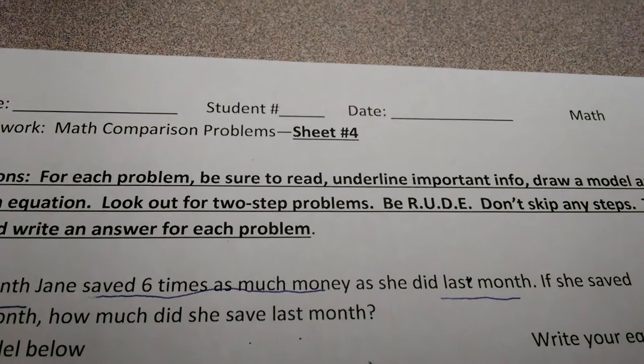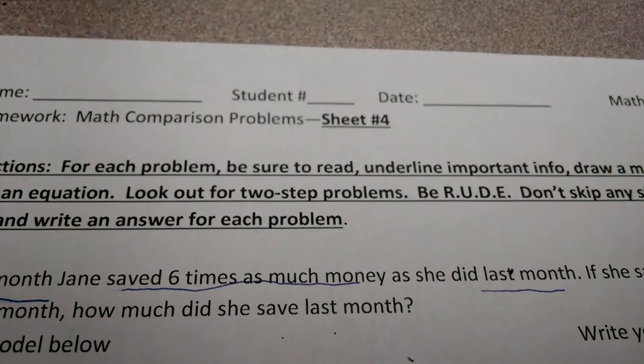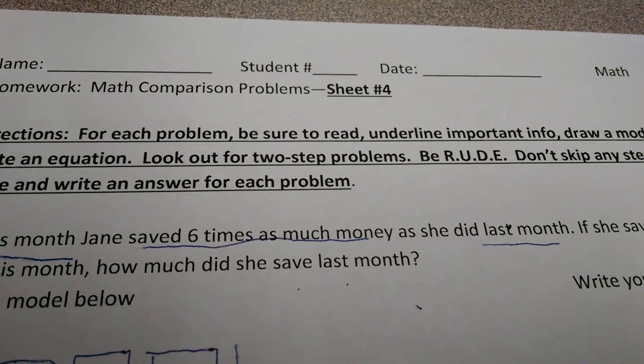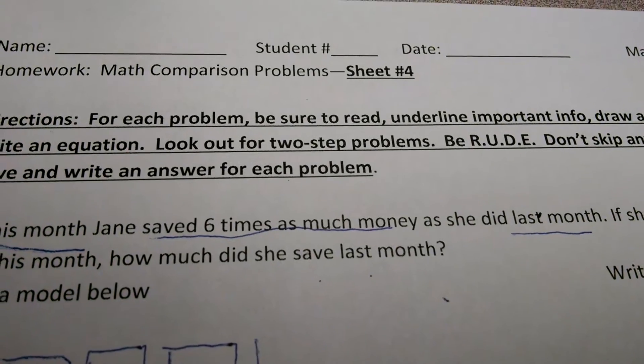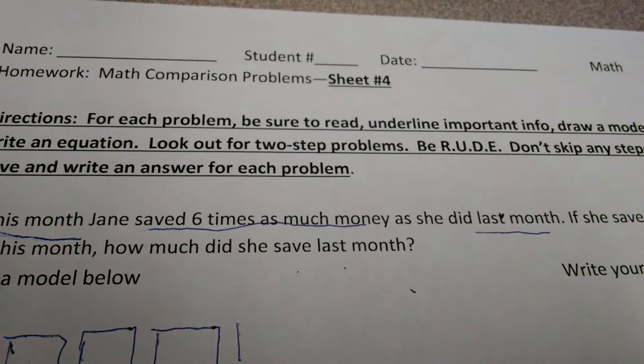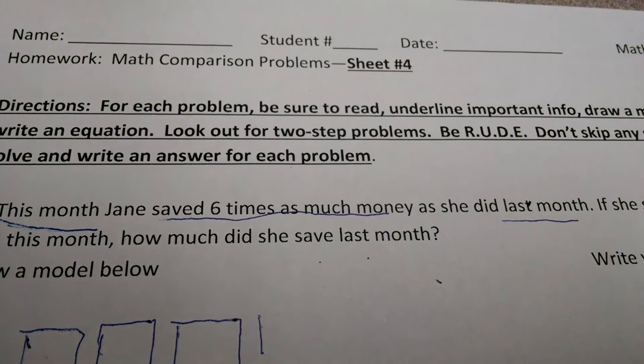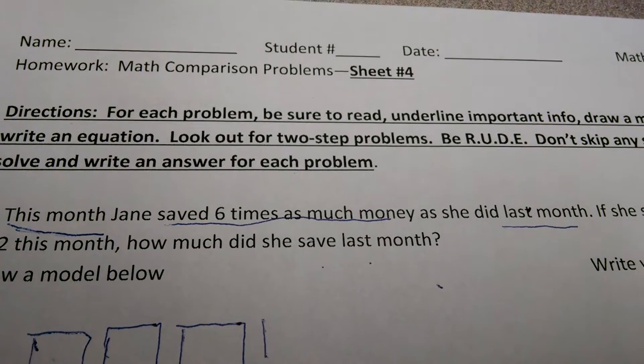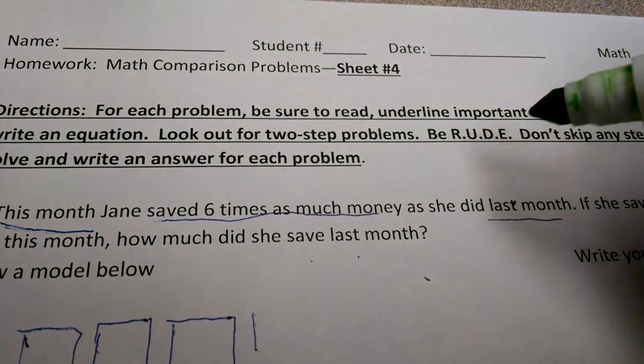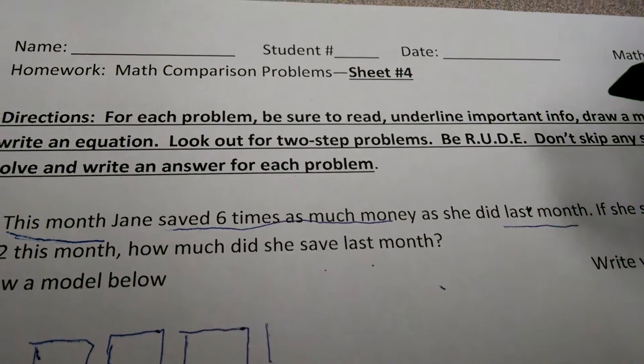Well, we've got a four-step strategy. And what you have to do when you see these word problems is you have to be rude. You have to be rude? What am I talking about? Yeah, I'm telling you to be rude. Now, I'm big on respect. But when it comes to word problems, you have to be vicious. You have to attack it. So be rude. R-U-D-E. Read, underline, draw a model, and write an equation.